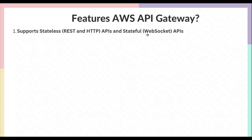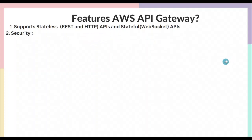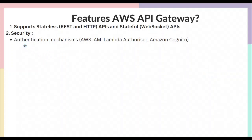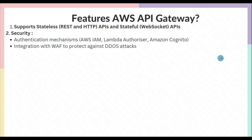Some key features of AWS API Gateway: first, it supports building three kinds of APIs — REST, HTTP, and WebSocket. REST and HTTP are stateless APIs; WebSocket is a stateful API. For security, you can implement authentication in various ways: AWS IAM authentication, custom Lambda authorizers, or Amazon Cognito user pools. You can also integrate API Gateway with WAF — the Web Application Firewall service by AWS — to protect your application against DDoS attacks.